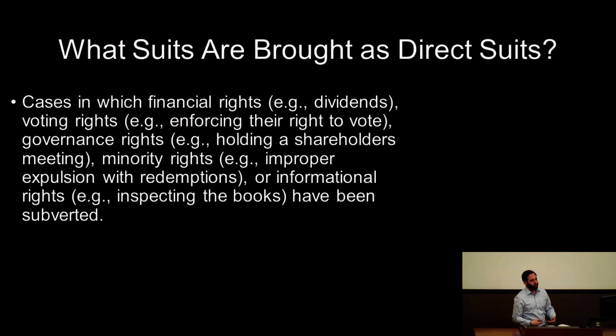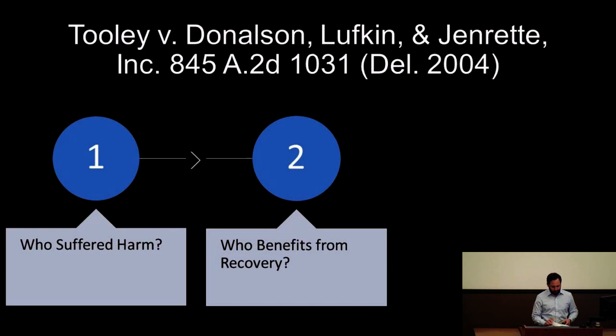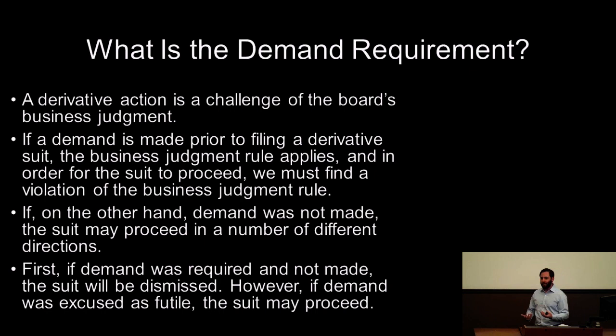Direct suits pertain to the financial rights of the shareholders as shareholders — not the corporation's profits, but the dividends to be received by shareholders, voting rights, and informational rights that they themselves own as shareholders. The test for this is in Thule — we call this the Thule two-step, which basically asks two fundamental questions: Who suffered the harm and who would benefit from the recovery? This test leads us to answer whether a suit should be filed in a direct or a derivative manner.